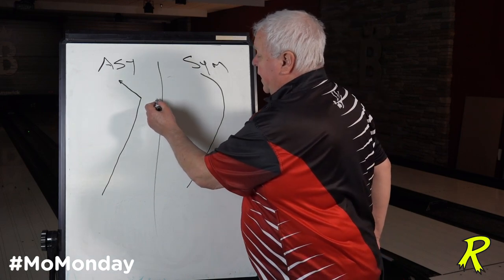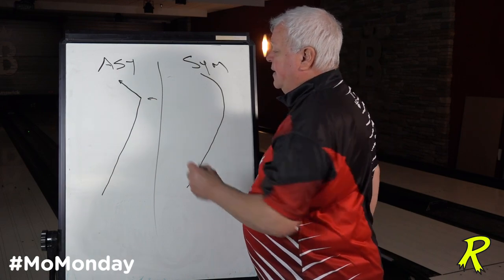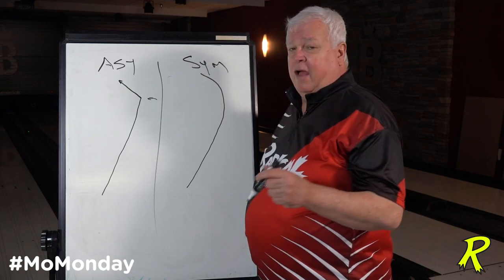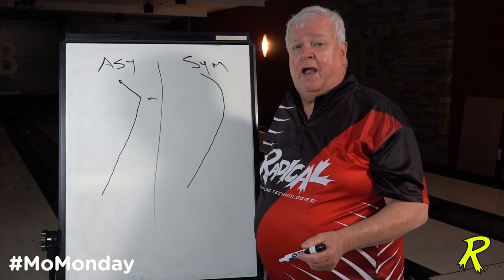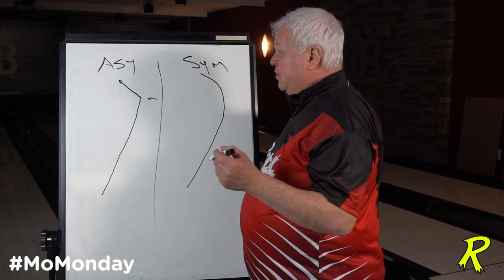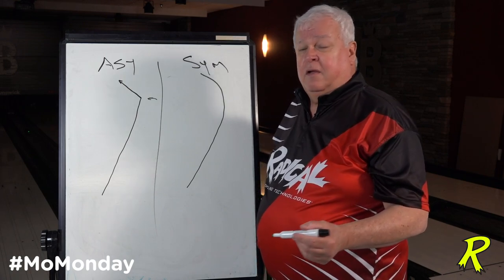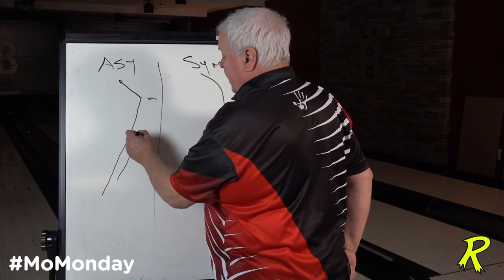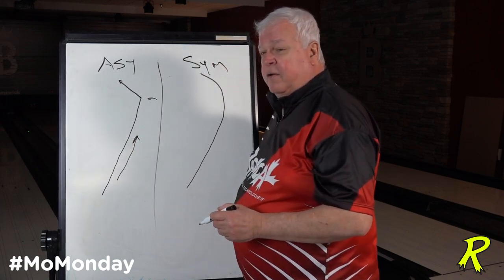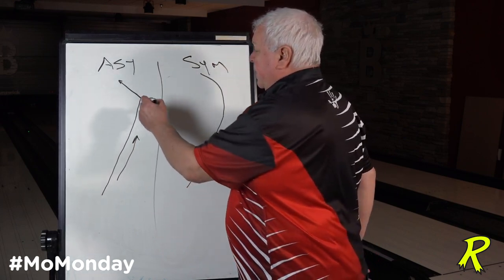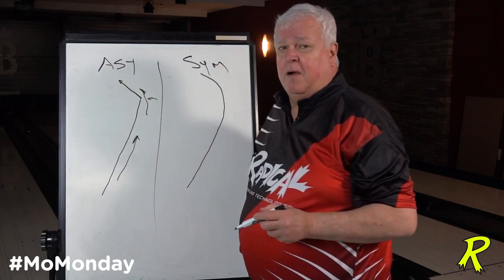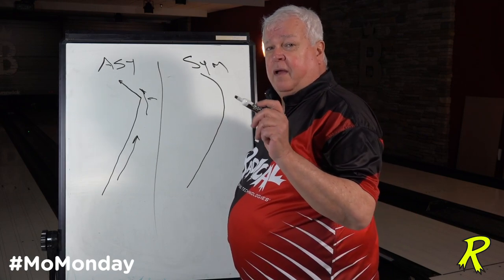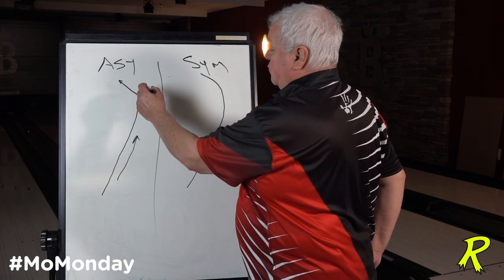Depending on the situation, an asymmetrical ball has a quicker reaction to friction — it's going to turn quicker, it's going to have a sharper angle of entry, but it's going to peel off energy quicker. So your skid zone is longer, your hook zone is sharper and shorter, and your roll zone is shorter as well.